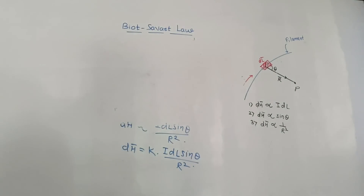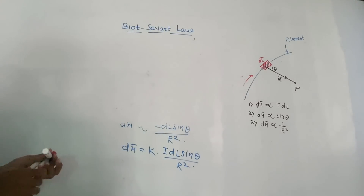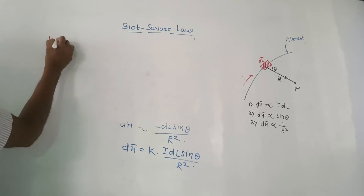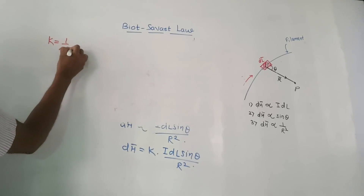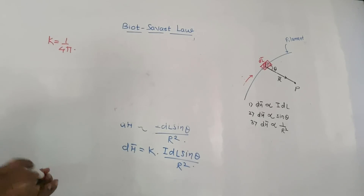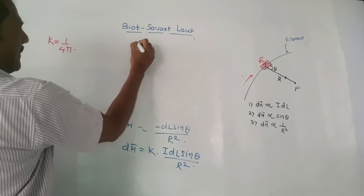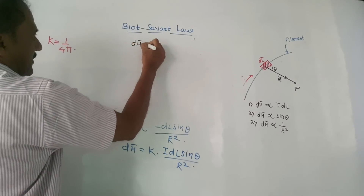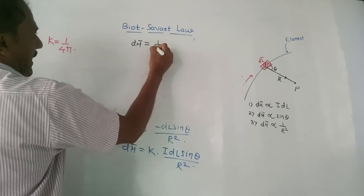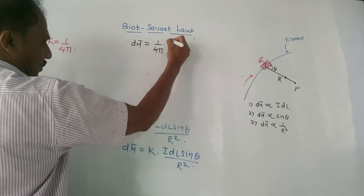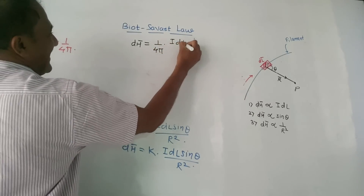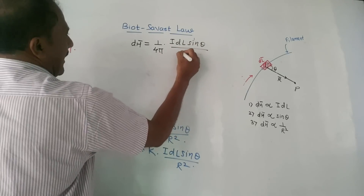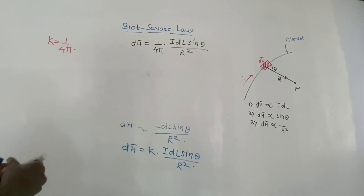Adding the value of K equals 1 by 4 pi into the equation, we get dH bar equals I dL sine theta upon 4 pi R squared.